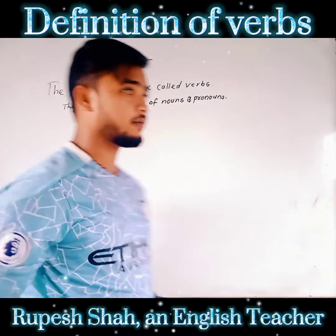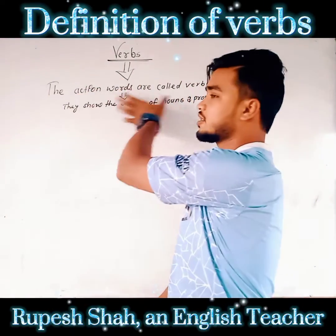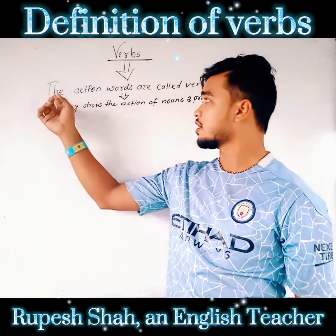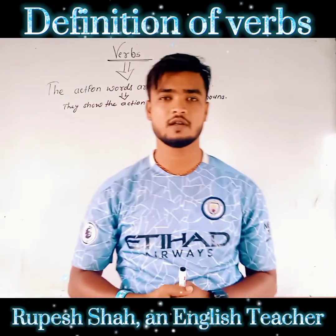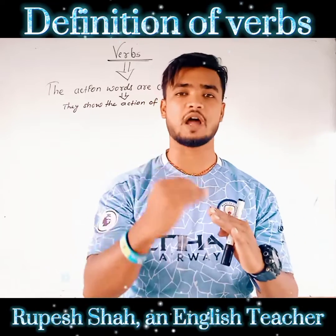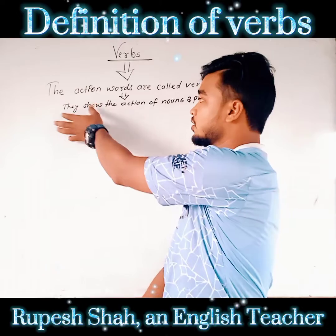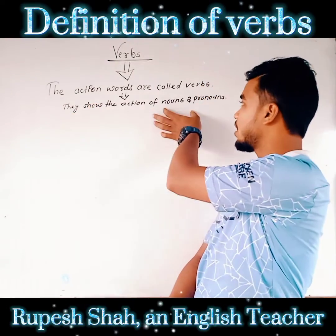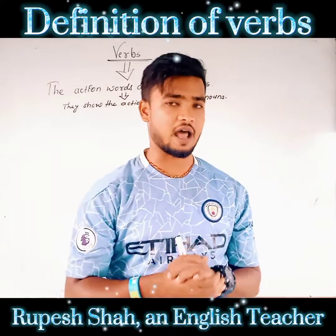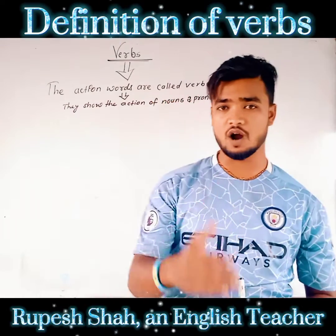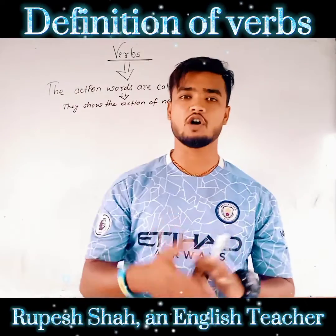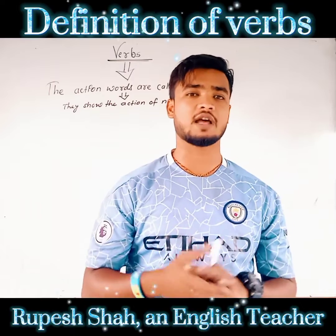Now look on the board. Here is written the definition of Verbs. The definition is: the action words are called Verbs. The words that show the actions of nouns and pronouns — they show the actions of nouns and pronouns. Verbs always show the actions of nouns and pronouns, therefore the verbs are known as the action words. The words that explain the activity or the work done by the noun or pronouns — that type of words are known as the verbs.